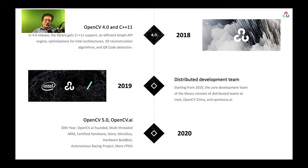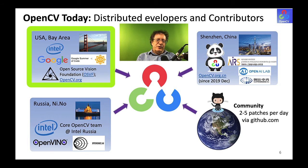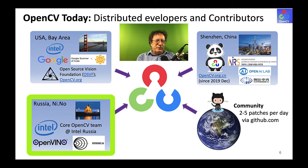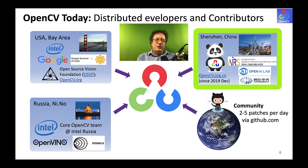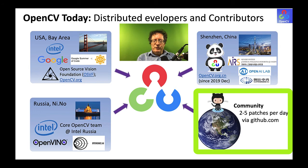Looking at OpenCV today: there are development groups in California, and that group supports a team of three people in Russia full-time on development. Intel supports about five people full-time on OpenCV development, also happening in Russia. In Shenzhen, China, we now have a group of two people full-time that's going to grow to five. There are also companies there helping, especially with ARM optimization. And there's a global community of developers from which we get two to five pull requests integrated into OpenCV per day.